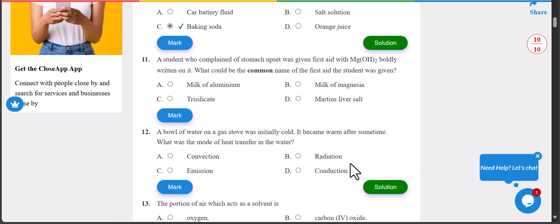Number 11: a student who complained of stomach upset was given first aid with Mg(OH)2 written on it. What could be the common name of the medicine the student was given? The answer is B, milk of magnesium. Let's check - the answer is B because of the symbol Mg for magnesium.